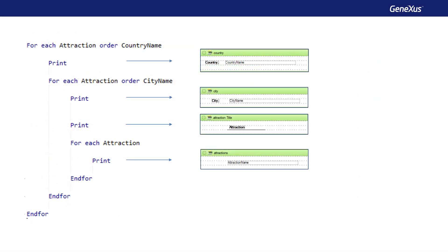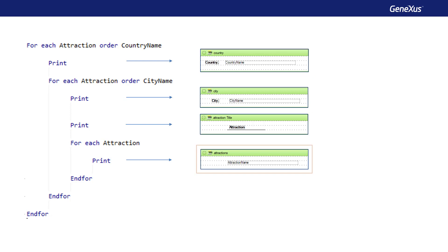In this case, we want to list all countries. For each one of them, we want to list their cities. And for each city, we want to list their attractions. The only restriction is that we want to do it only for the countries and cities that have tourist attractions recorded.